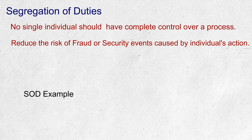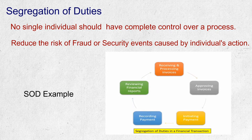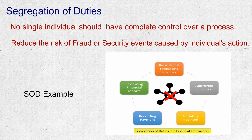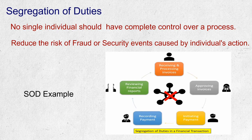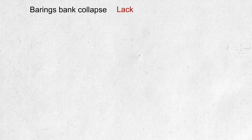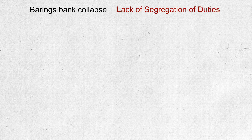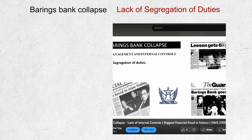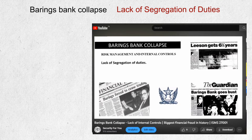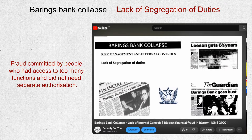For example, there cannot be a single person who is both processing vendor payments and also requesting or approving the payment — different individuals must handle these different transactions. One classical example of the consequences generated by a lack of segregation is the Barings Bank collapse. This is a classical example of fraud committed by people who had access to too many functions and did not require separate authorization.